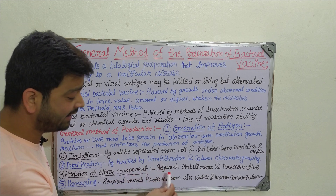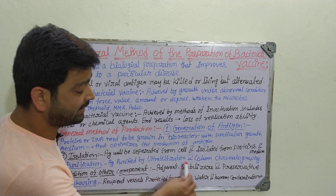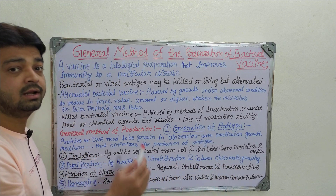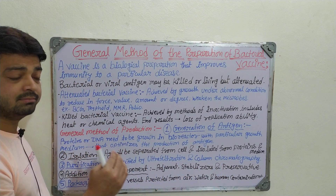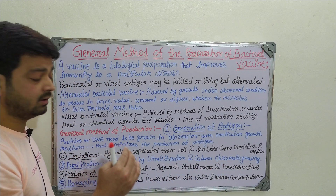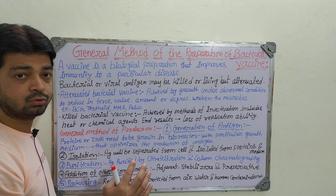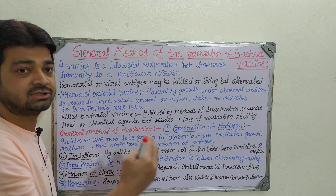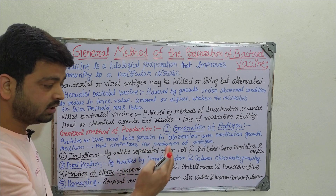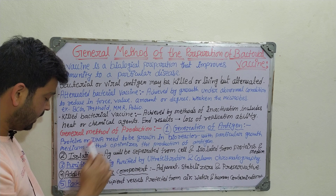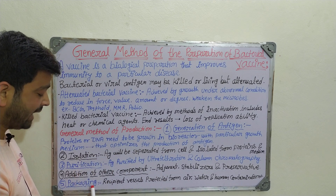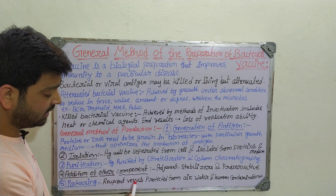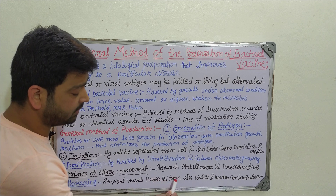The fourth step is addition of other components. After purifying the antigen, we can add adjuvants, stabilizers, and preservatives so that the vaccine is kept safe and can effectively show its action on the immune system.